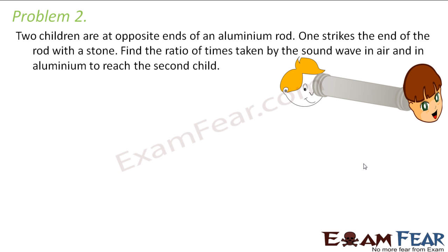Problem 2: Two children are at opposite ends of an aluminium rod. One strikes the end of the rod with a stone. The second child will be able to hear the sound produced by the striking. We have to calculate the ratio of the times taken by the sound wave in air and in aluminium to reach the second child.